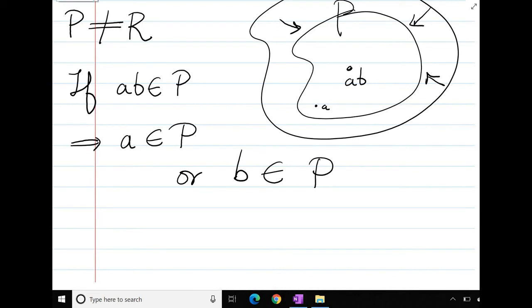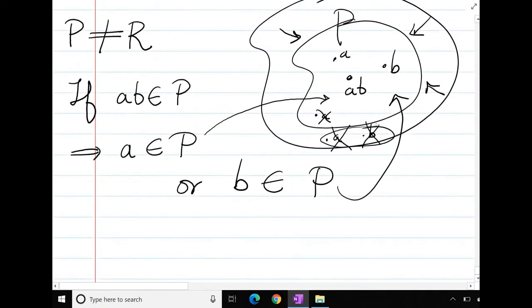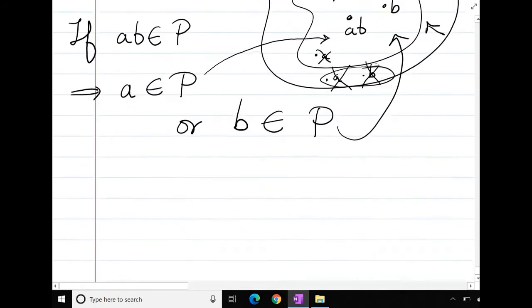So this is the definition. Either a should be inside P or b should be inside P. It should not happen that both are outside. This is not good. So this should not happen. At least one of either a is inside or b is inside. If both are inside, no problem. But at least one of them must be inside the set P. In that case, I will call this P to be a prime ideal.